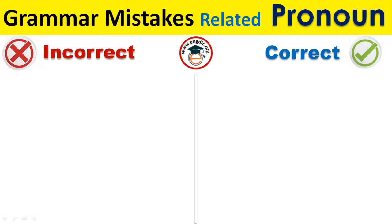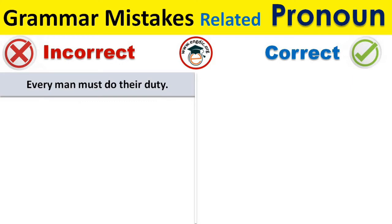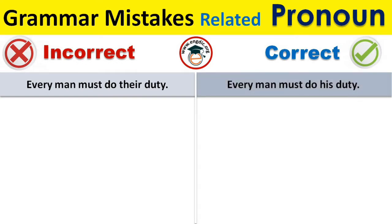A pronoun error occurs when a pronoun does not agree with its antecedent. Watch this video to be aware of such errors. For example: 'Every man must do their duty' is incorrect. The right sentence is 'Everyone must do his duty.'